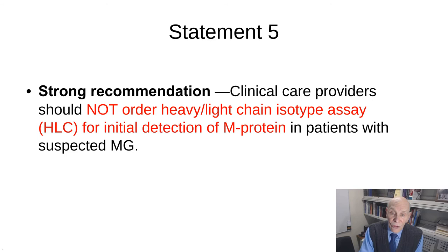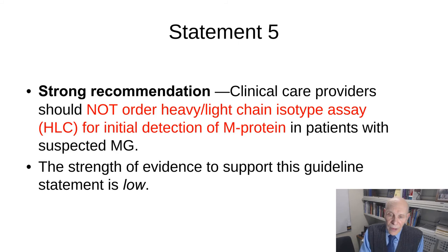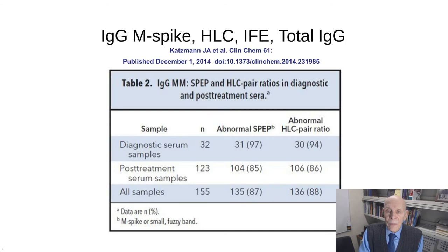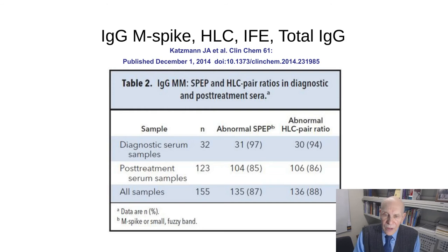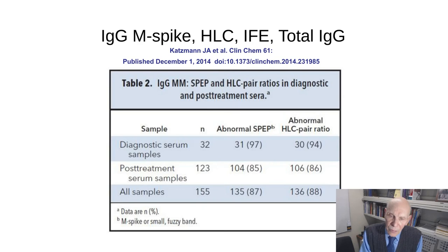Statement five: clinical care providers should not order the heavy light chain isotype assay for the initial detection of M proteins in patients with suspected monoclonal gammopathy. It's a fine assay, but not intended for this purpose; evidence strength is low. In Katzman's study using a three-range diagnostic approach similar to his SFLC work: of 32 patients with a monoclonal IgG M protein, 31 were detected by protein electrophoresis alone and 30 by an abnormal heavy light chain ratio. The ratio performed slightly better in post-treatment follow-up but not in initial detection, so it was not recommended for that purpose.